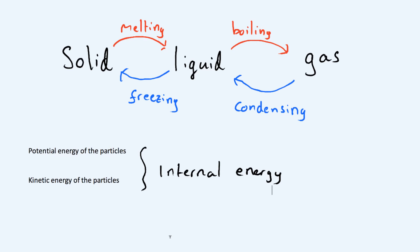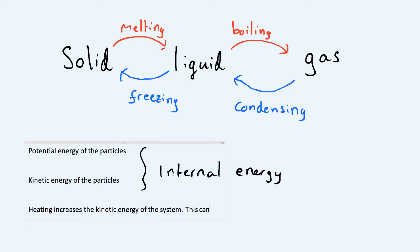So heating increases the kinetic energy stores of the system. This can cause either the temperature to increase, OR — and I'll put that in capitals — a change of state.